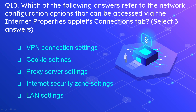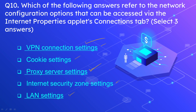Question number 10: Which of the following answers refer to the network configuration options that can be accessed via the Internet Properties applet Connections tab? Select three answers. The options are VPN connection settings, cookie settings, proxy server settings, internet security zone settings, and LAN settings. The correct options are VPN connection settings, proxy server settings, and LAN settings.